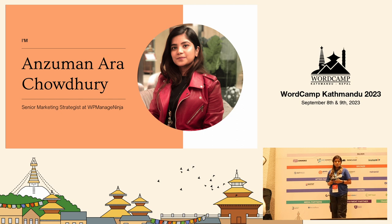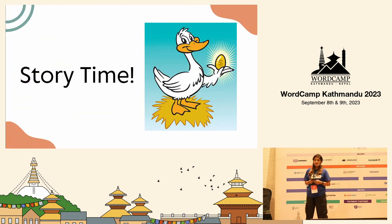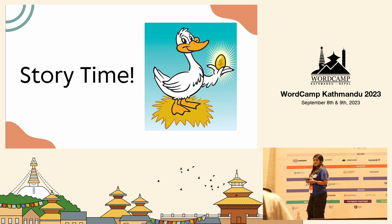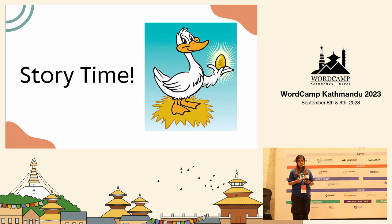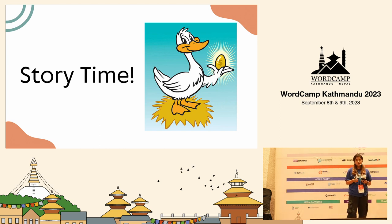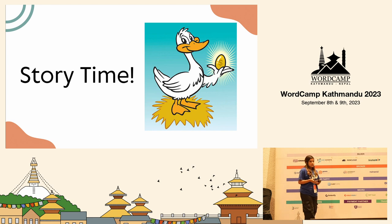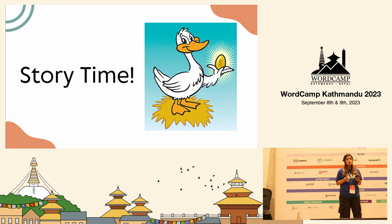Before moving on to my topic, let's tell you a small story. In this story, there was a farmer who had a golden goose, meaning that the goose was laying a golden egg every day, and he used to sell the egg to the market and got a good amount of money. But after some time, he became very greedy and cut down the belly of the goose one day, thinking that he could get all the golden eggs at a time.